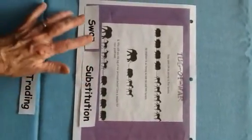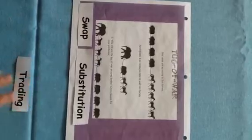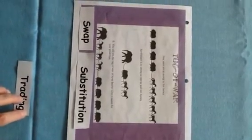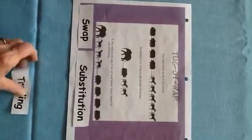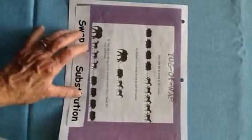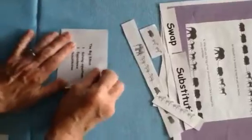And then finally we have the idea that we talked about of swapping. So a swap is like a trade, but in algebra we call this substitution. When we're solving this problem, we are really substituting one value for another. So in summary, here are the big ideas: solving equations, equivalence, and substitution.